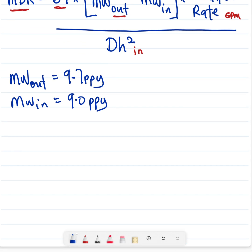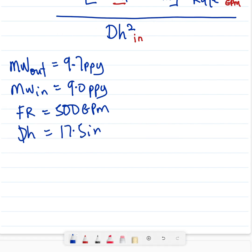You were flowing at, say, 500, your flow rate is 500 gallons per minute, and the diameter of your hole, the hole you were drilling, is 17.5 inch.